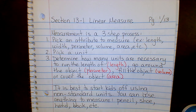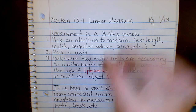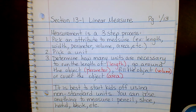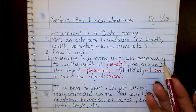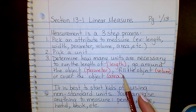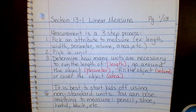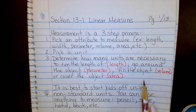Then you have to pick a unit — you want to pick a reasonable unit. If you're going to measure the length of a pencil, you probably don't need to use feet or yards; you want to pick a smaller unit. Then you determine how many units are necessary. If measuring length, how many units run the length of that object? For perimeter, how many units go around? For volume, how many units fill it? For area, how many cover it?